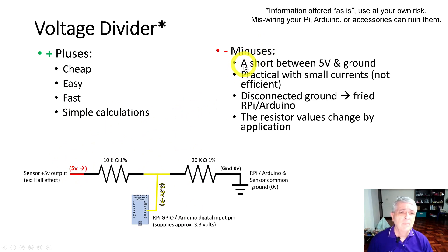The minuses: it's basically a short between 5 volts and ground, so this is one of the reasons you want to use the higher resistor values when possible. It works well with small currents, it's not efficient, especially if you need a larger current. If you end up with a disconnected ground, you're going to fry your device. And the resistor values change by application, so you can't always just say I'm going to use a 10K and 20K.